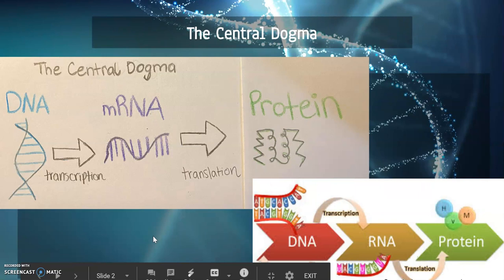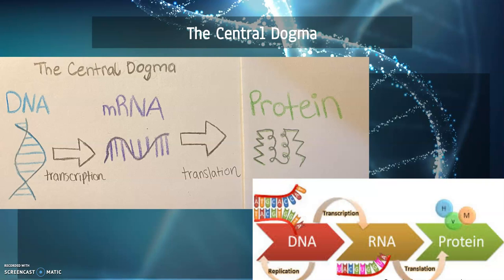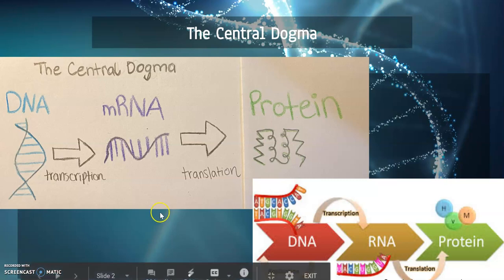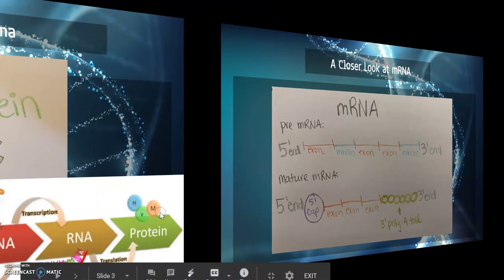Let's start with the central dogma of genetic information transfer. Information in DNA leads to mRNA via transcription, then protein is produced from mRNA by translation. Our investigation lies in the details of translation, but first let's take a closer look at mRNA.